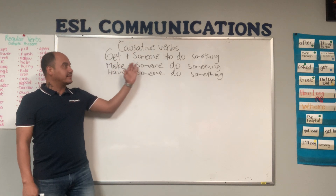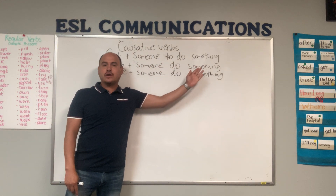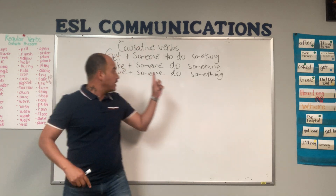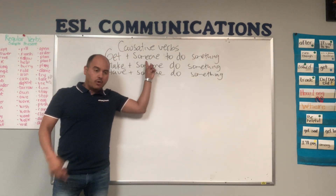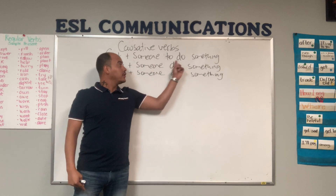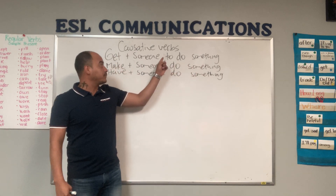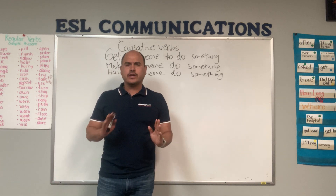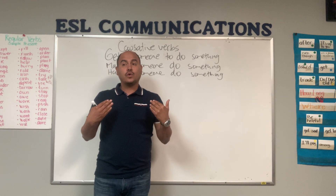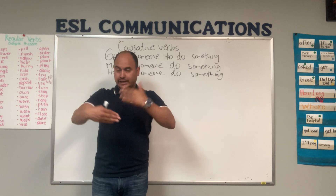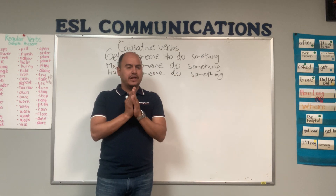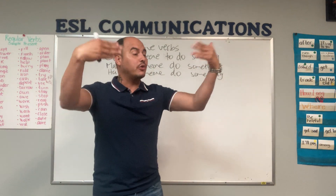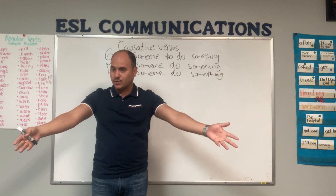Check out the pattern: get someone to do something. You need an infinitive. Get someone to do something. ¿Qué es el verbo get? Get es conseguir — conseguir que alguien haga algo. Causar, provocar, hacer que alguien haga las cosas.